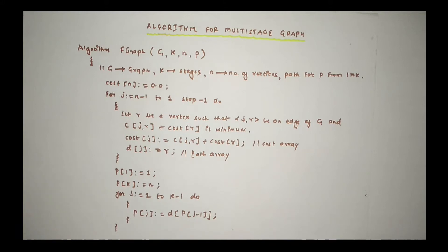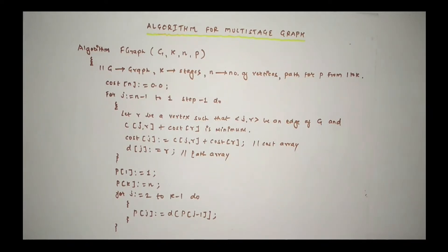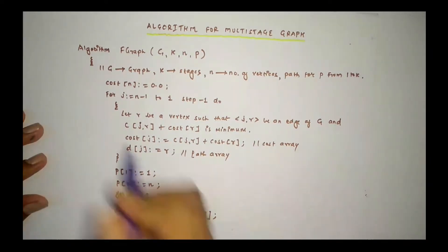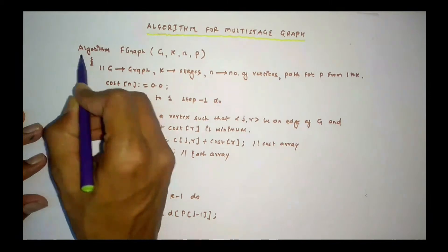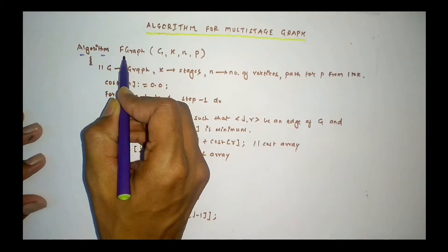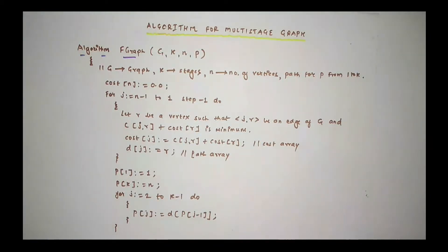Hello everyone. In this lecture we will study the algorithm for multi-stage graph. We are using the forward approach for solving the single shortest path for the multi-stage graph. So here we start Algorithm F-Graph — F-Graph means the forward approach.